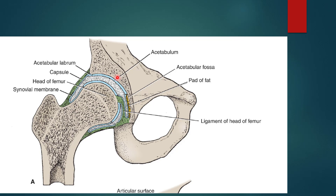In this diagram, the head of the femur is articulated in the acetabulum of the hip bone, forming the hip joint. The capsule of the hip joint is visible, and beneath the capsule there is a synovial membrane with synovial fluid in the synovial cavity. This is a synovial joint — specifically a ball and socket synovial joint — where the femoral head is the ball and the acetabulum is the socket.